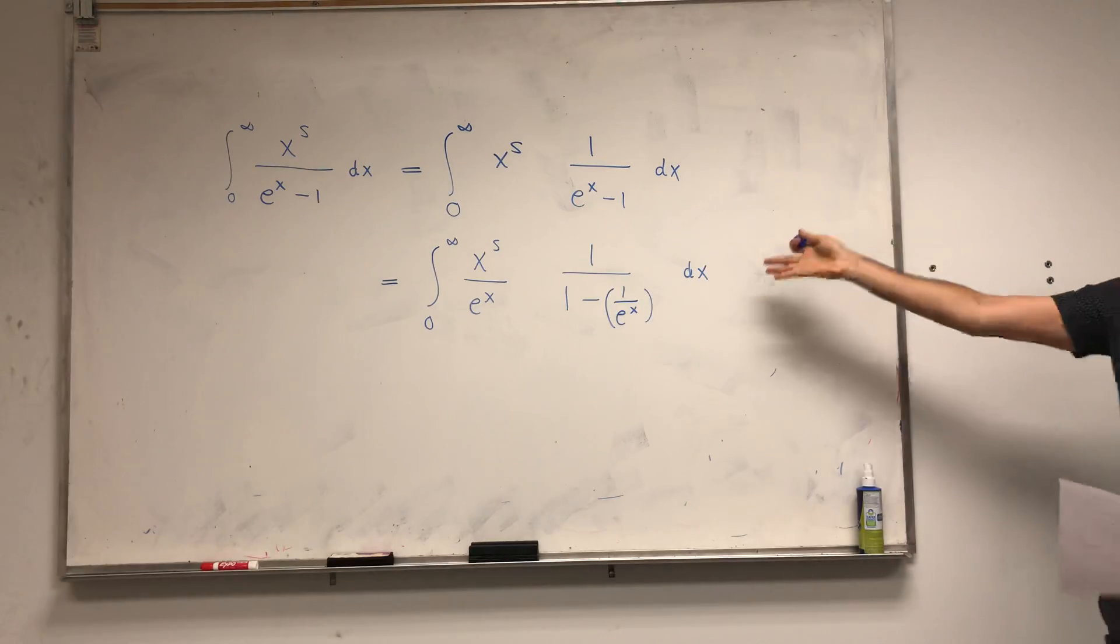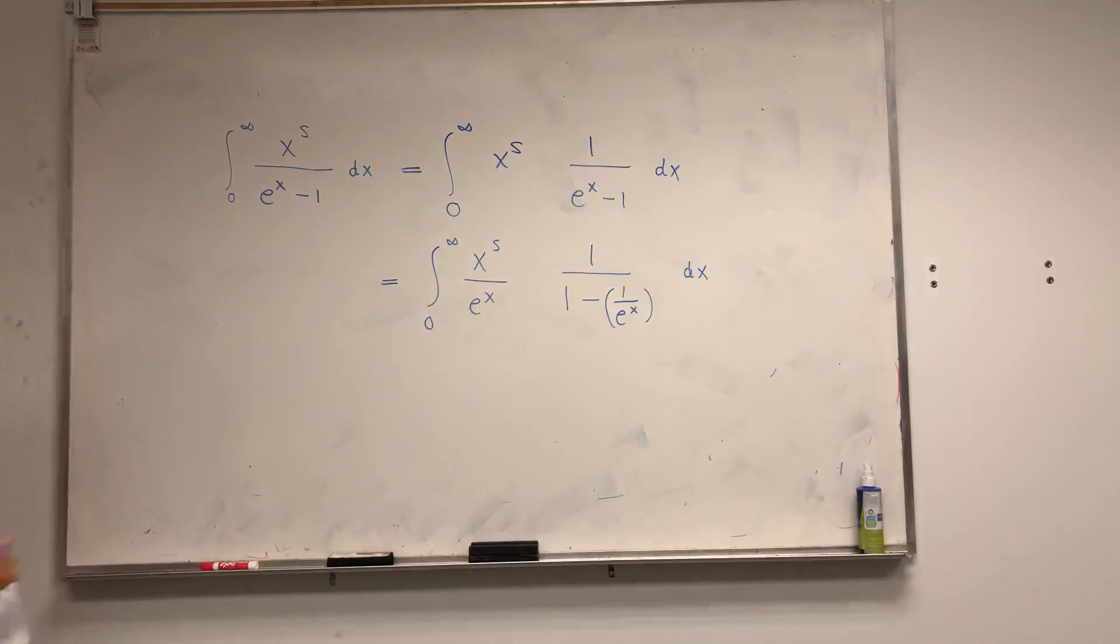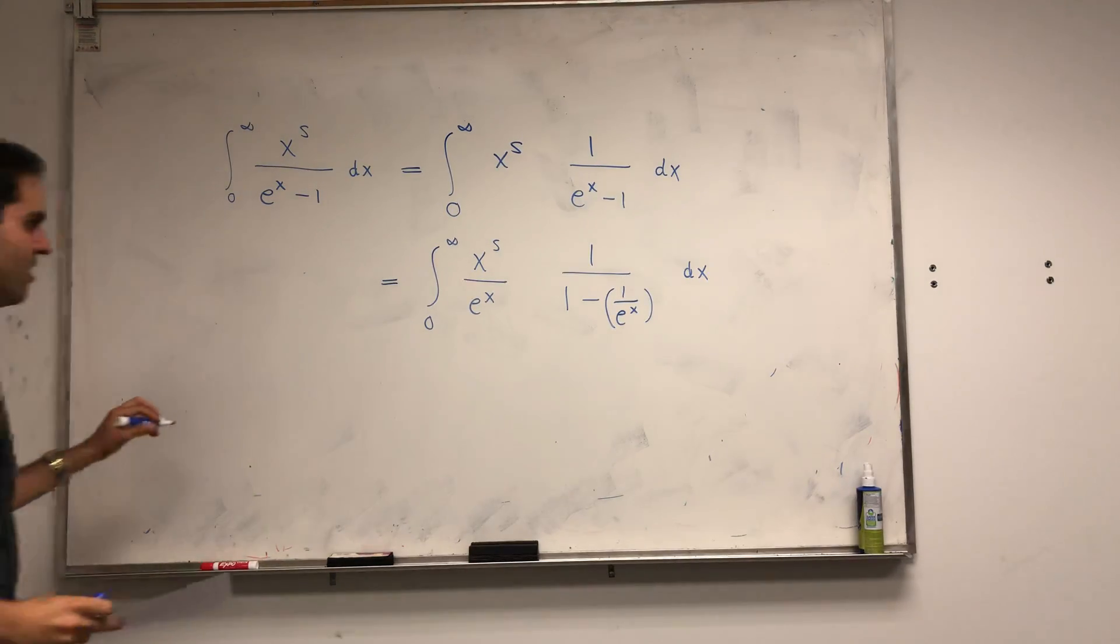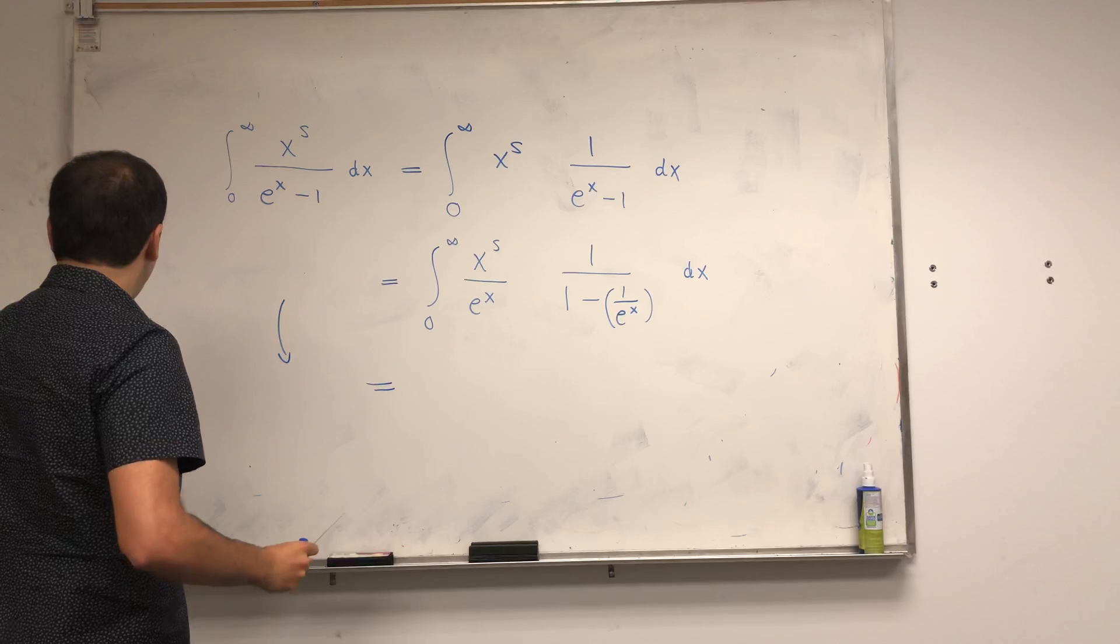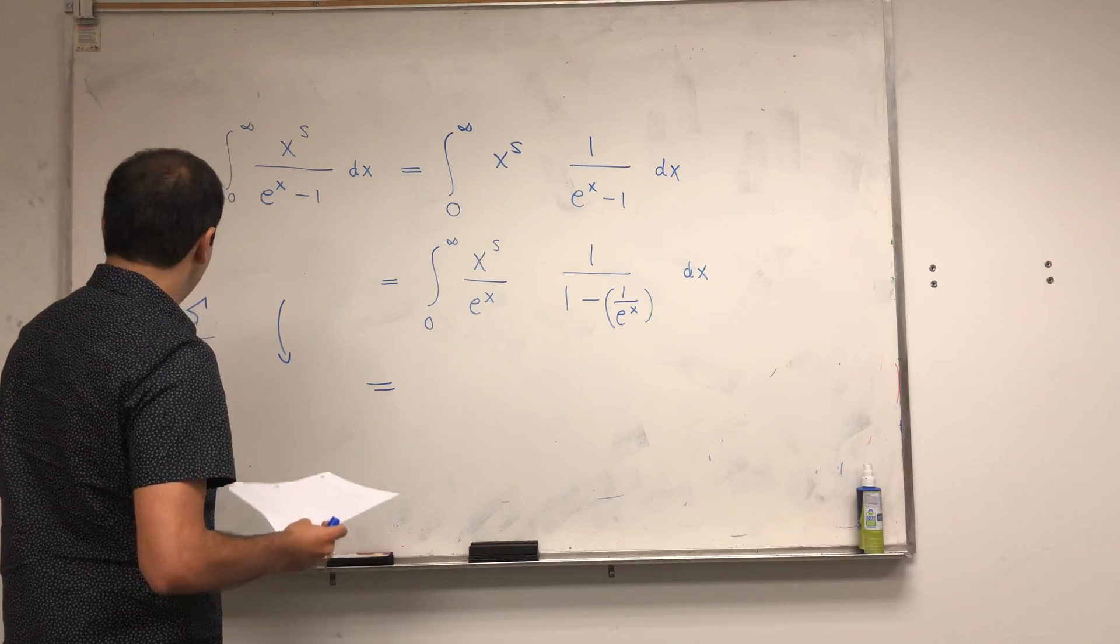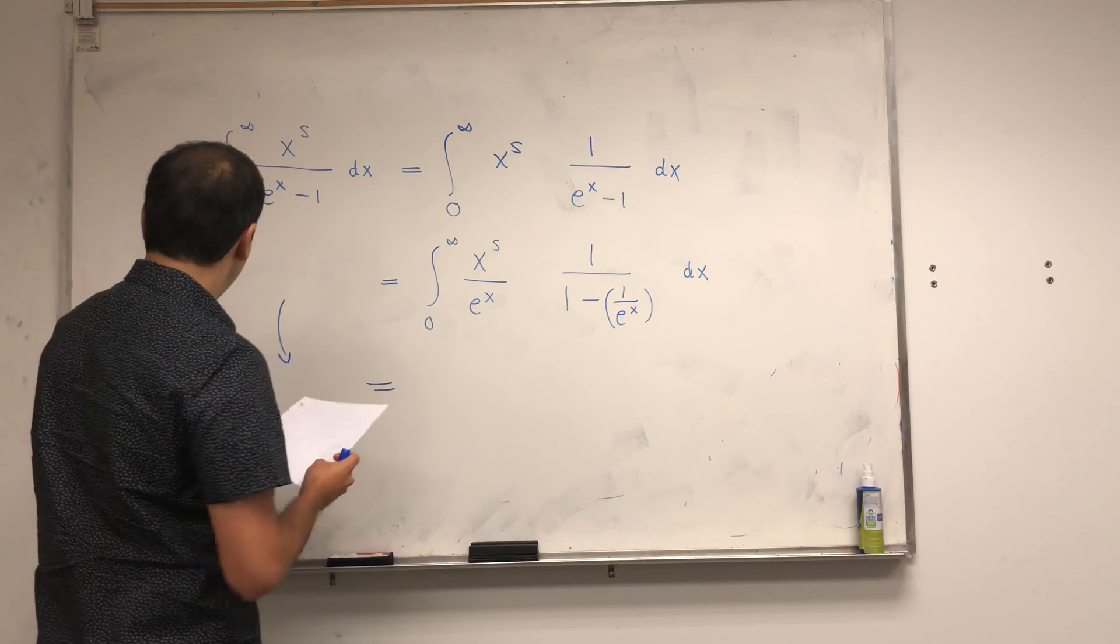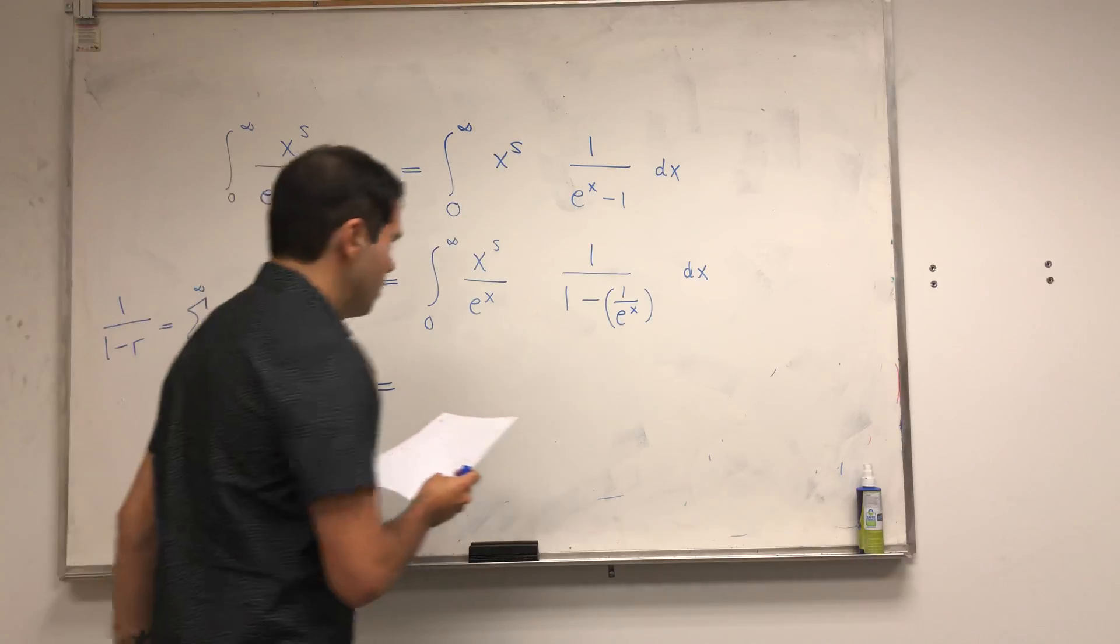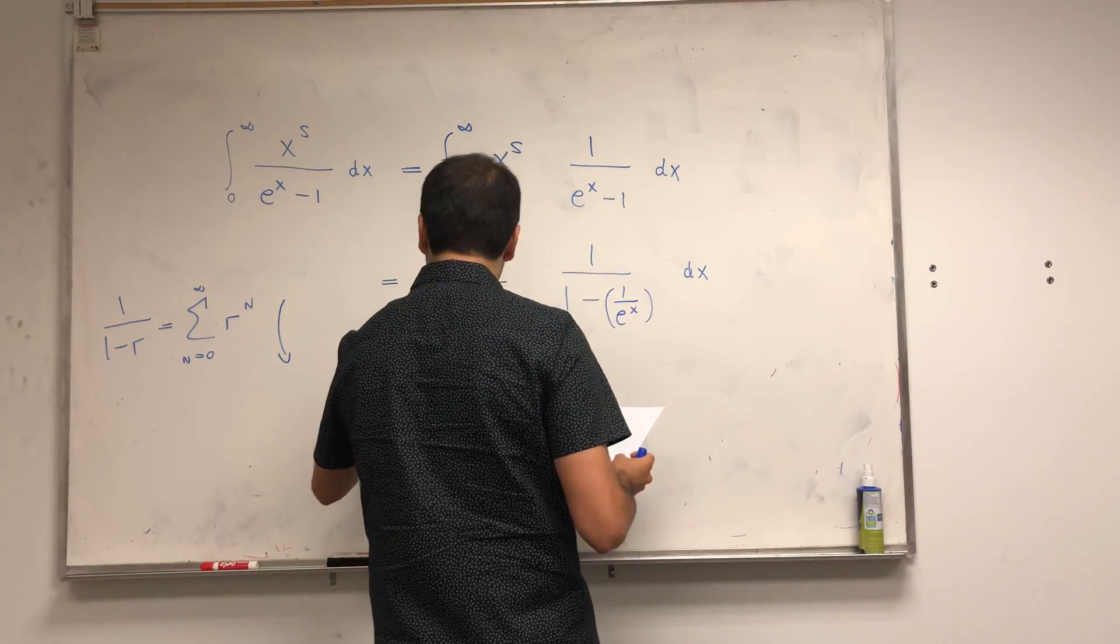And now this looks more like a geometric series because e to the x in that region is strictly greater than 1. And so recall, 1 over 1 minus r is the same thing as sum from n from 0 to infinity of r to the n.